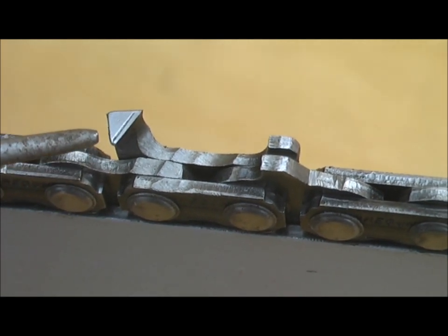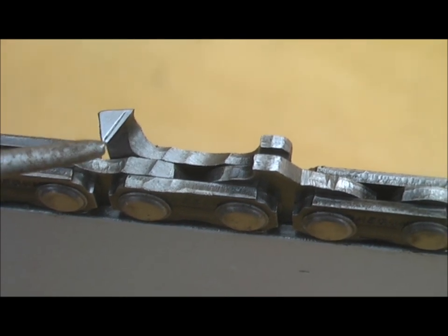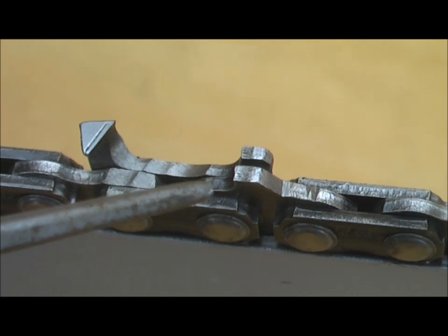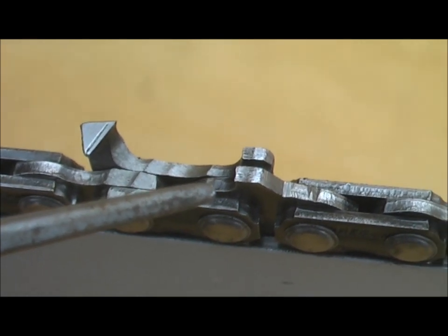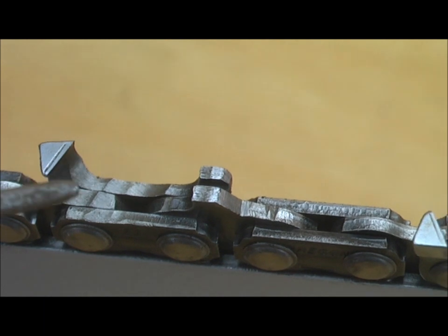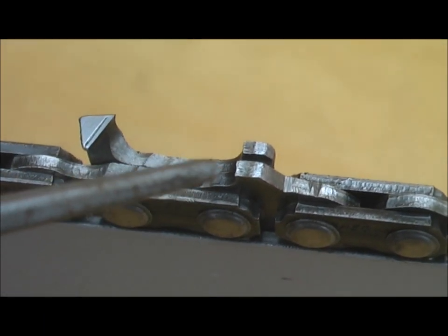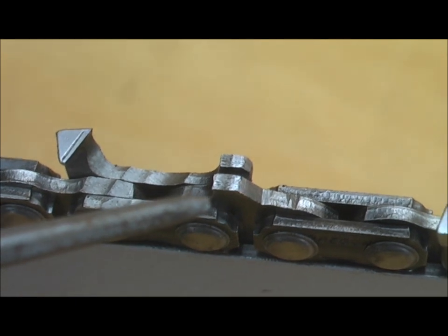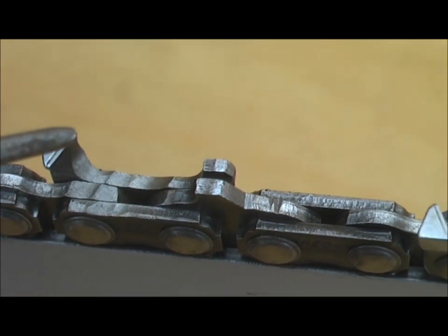The main reason for that is because I'm getting all the teeth the same length and same angle and also just as important all the depth gauges are correctly set. Now when the chain gets down this short you can actually raise these depth gauges down a little more to increase the angle of the wood as it feeds up into the cutter top plate.